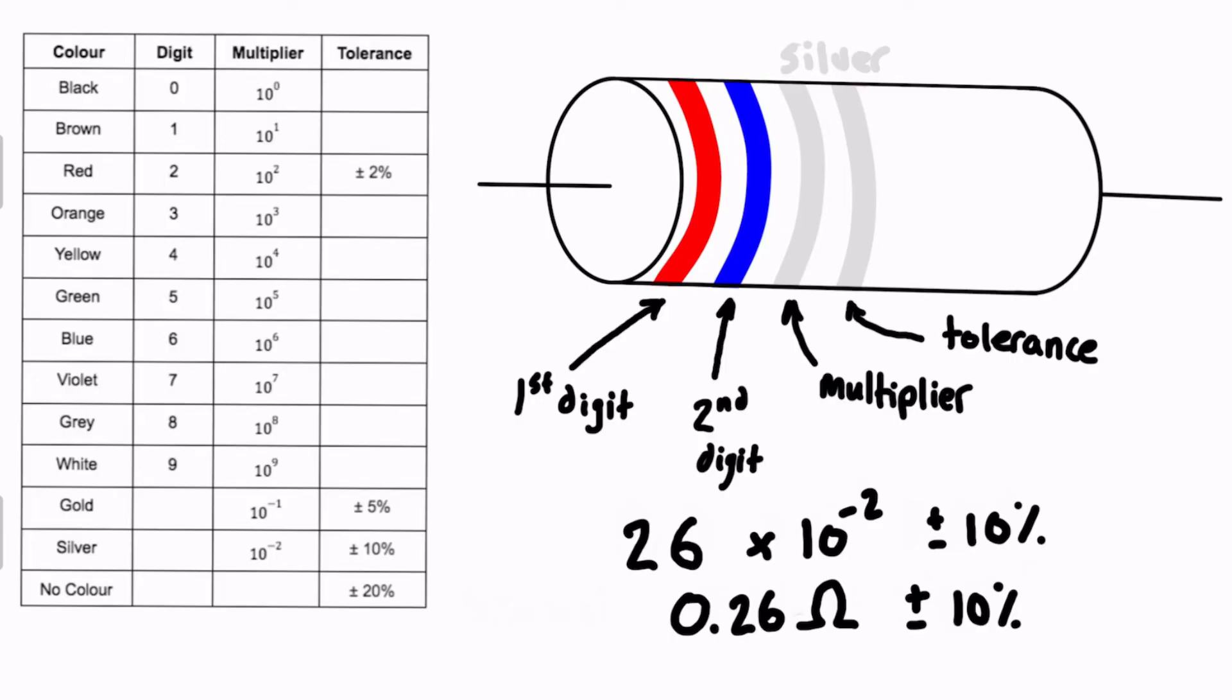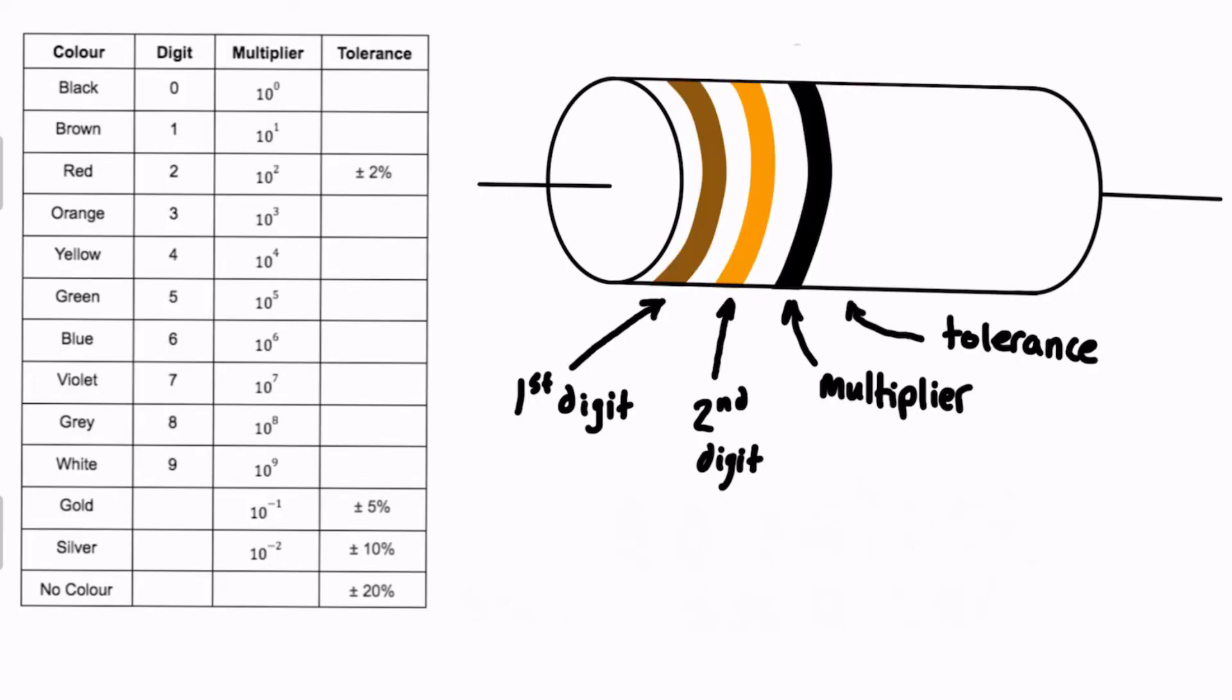All right, let's do one last example here. So in this case, we've got a resistor with brown, orange, and black. There's only actually three lines. The tolerance is blank, and we'll see how we work with that.